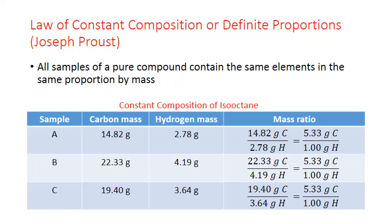Dalton also based his theory on the work of another French chemist at the time, Joseph Proust. Joseph Proust put forth the law of constant composition, or also known as the law of definite proportions. This states that all samples of a pure compound contain the same elements in the same proportion by mass. Proust formulated this law after doing many careful mass measurements of the elemental composition of a variety of different substances. And he found that regardless of what sample he started with, as long as the samples were of the same compound, they would always produce the same mass ratio of elements.